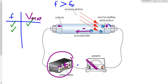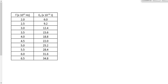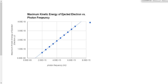Then you'd switch up the frequency and record the new stopping potential. Switch up the frequency again, record the new stopping potential. Now, what you would often do is take this data column for stopping potential and calculate kinetic energy. You'd leave frequency in the X column, but you'd calculate kinetic energy from the QV-stop equation. So my analysis table would look like this. Then I would plot a graph of kinetic energy versus frequency of photons.